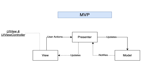Most importantly, the presenter is not dependent on UIKit, making it well-isolated and easily testable. The role of the model remains the same as in MVC, handling data-related tasks. It is worth noting that MVP follows a passive view pattern — all actions are forwarded to the presenter, which triggers UI updates using delegates. The view simply passes actions and listens for updates from the presenter.